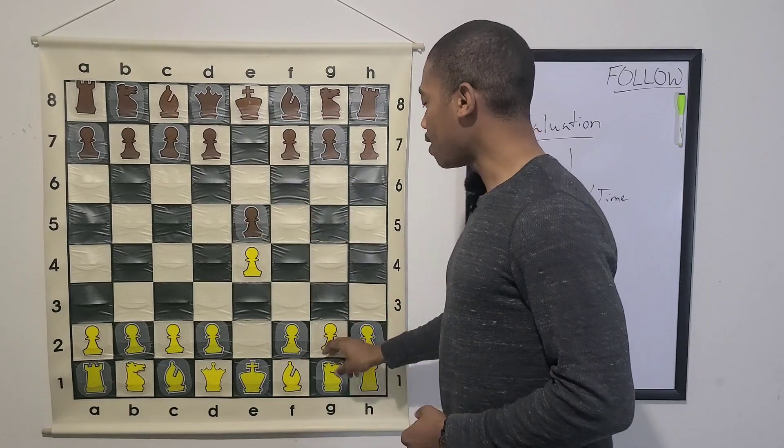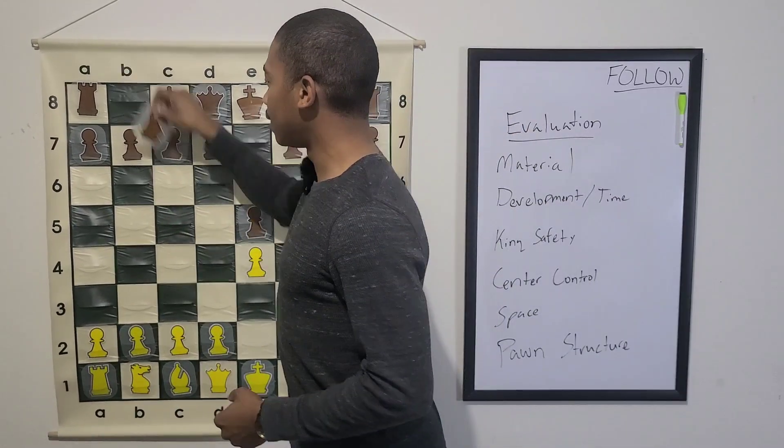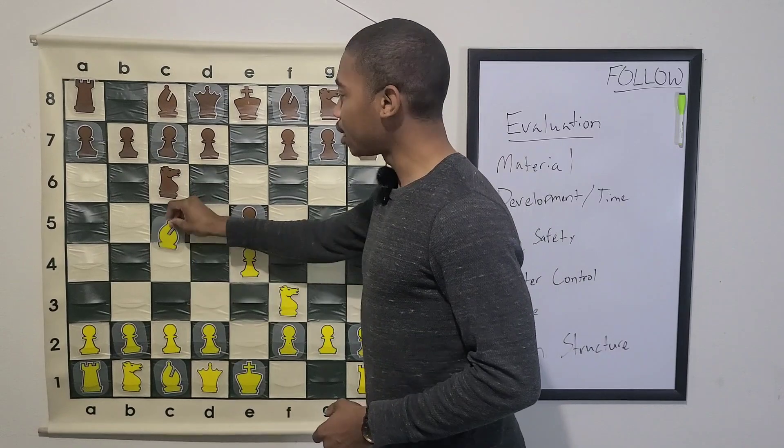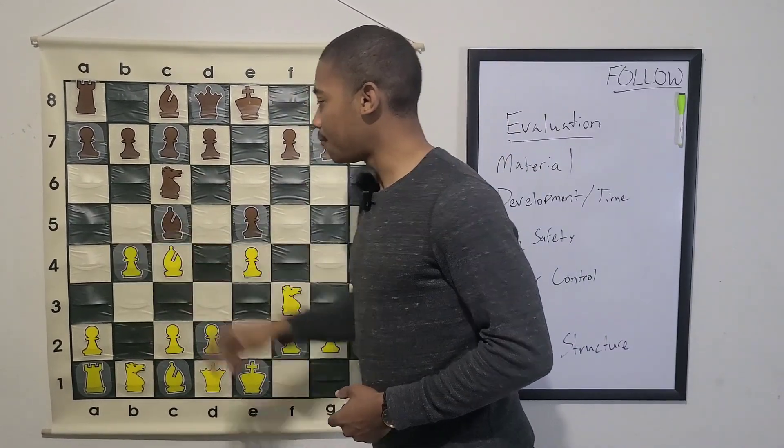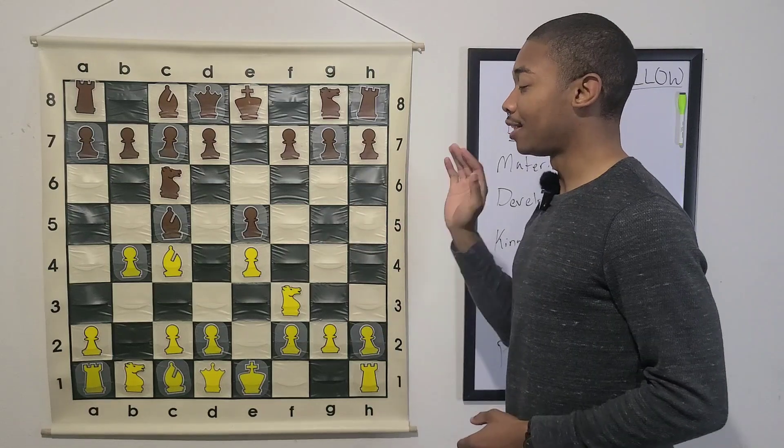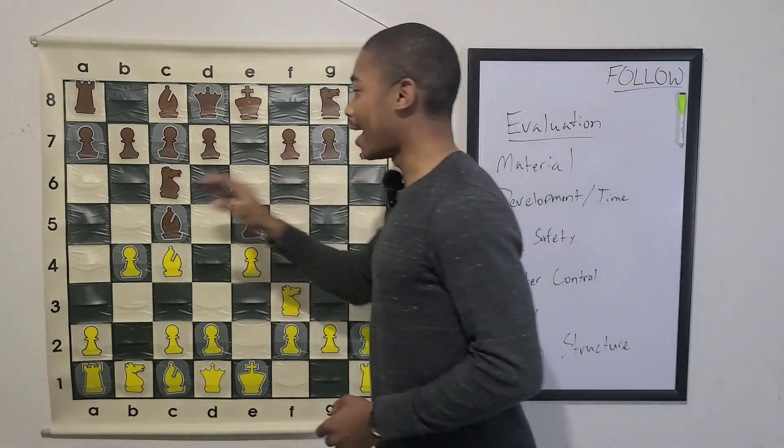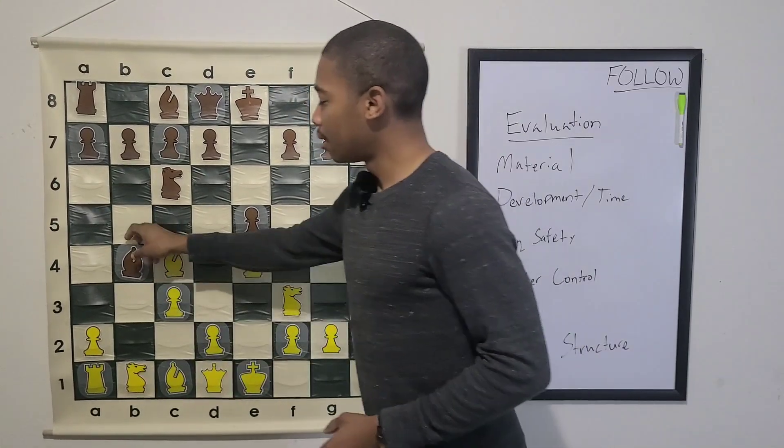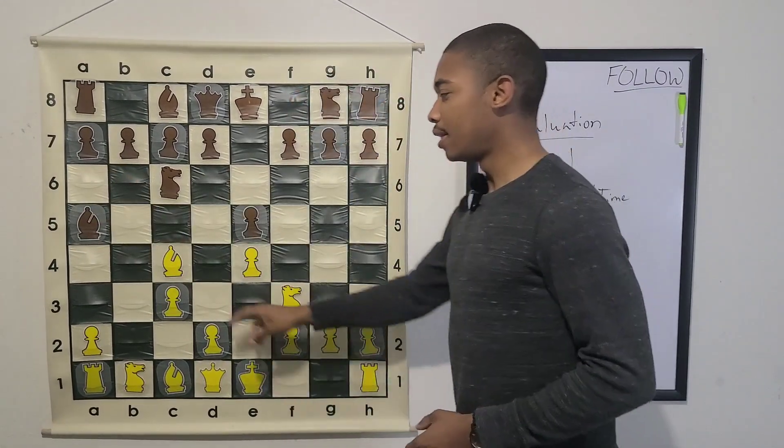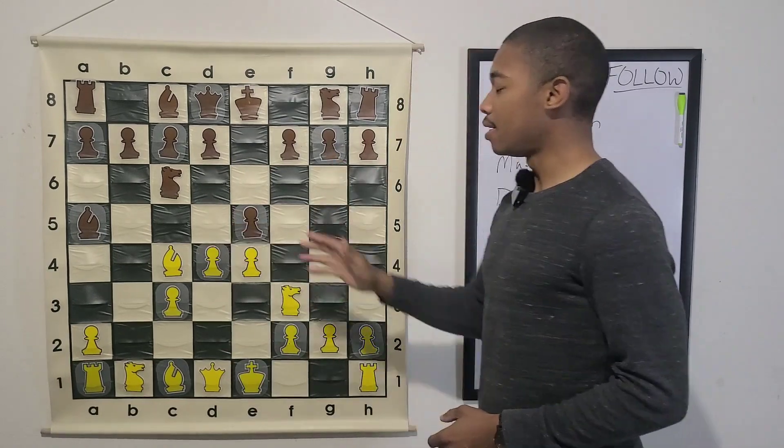E4, E5, Knight F3, Knight C6, Bishop C4, Bishop C5, and then B4 that initiates the Evans Gambit. And then after Bishop takes on B4, C3, Bishop A5, then the move that is played next, D4.